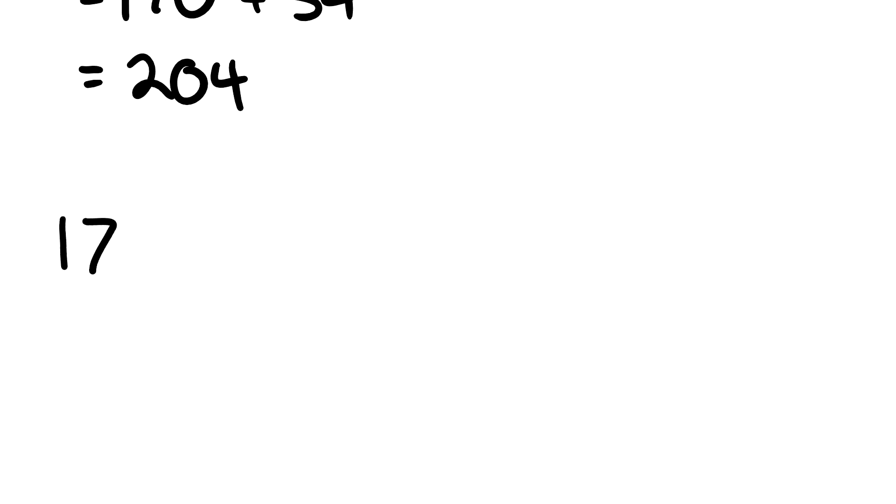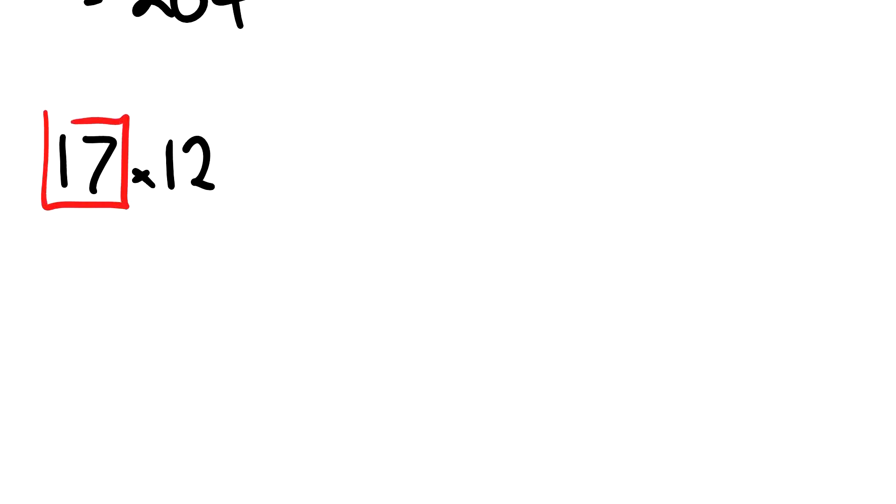Now I could do it again, there's a different way I could do it. Let's look at our 17 times 12 again. This time I could break up my 17 into let's say 10 and 7, so I end up with 10 times 12 plus 7 times 12.